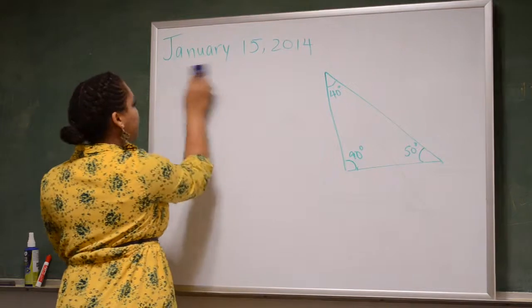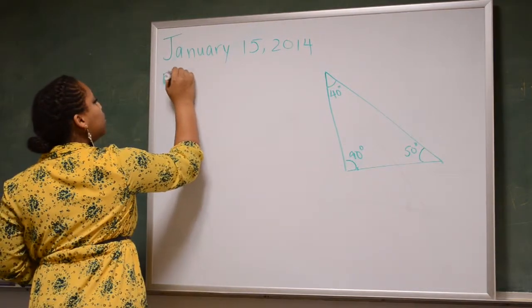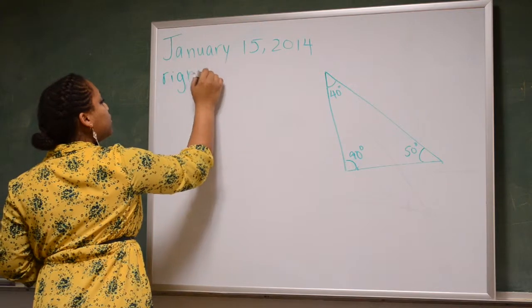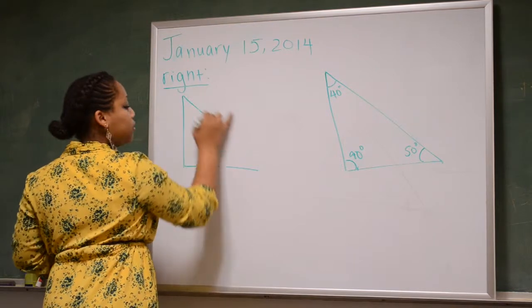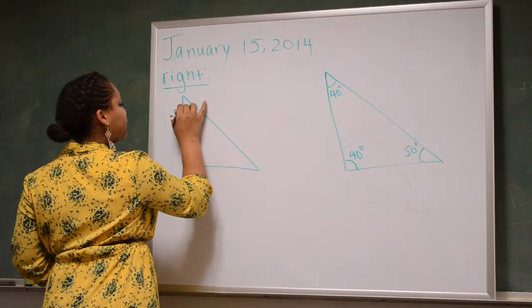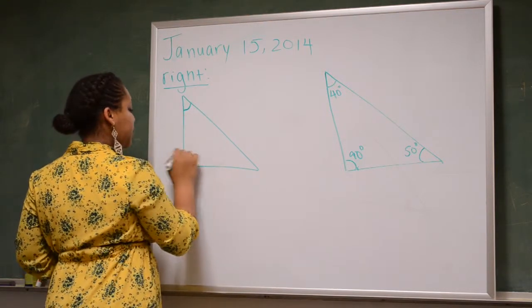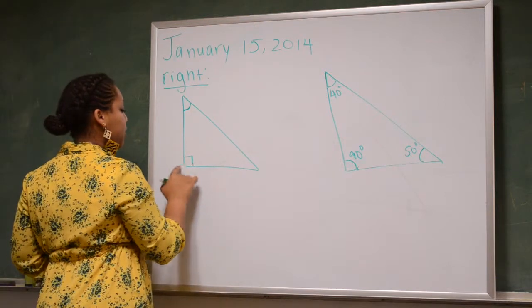So, which brings us to our next type of triangle, which is a right triangle. Another example of a right triangle would be this. And this box indicates that it's 90 degrees because it's a right angle.